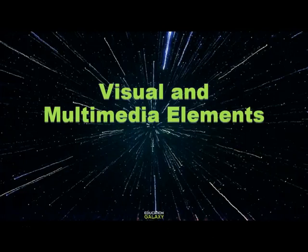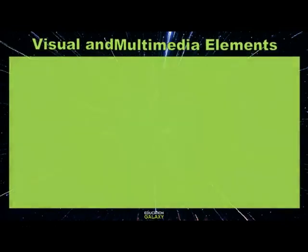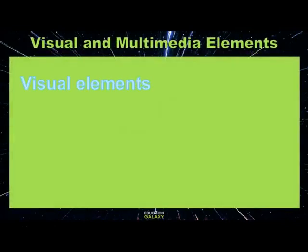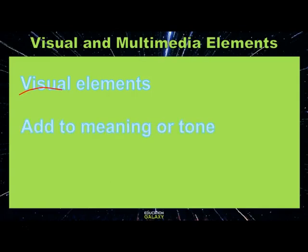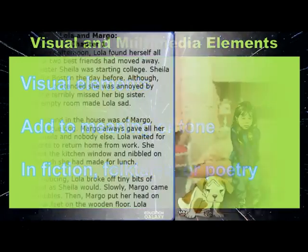Hello, my friends of the galaxy. Let's look at visual and multimedia elements in literary texts. Visual means something that can be seen, so visual elements are pictures and graphics that you can see. They add to the meaning or tone of literary texts, and you can see them in fiction, folk tales, or poetry.